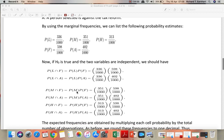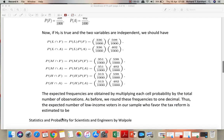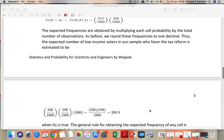In a similar manner, you can obtain the following intersections. The expected frequencies are obtained by multiplying its probability by the total number of observations. As before, we round these frequencies to one decimal.